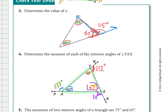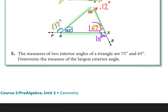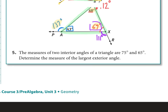The new theorem makes it a little quicker, but it doesn't have to be used all the time. The measures of two angles of a triangle are 75 and 65 — determine the measure of the largest exterior angle. Drawing a picture helps. We can find the third interior angle by subtracting 75 and 65 from 180, so the interior angle is 40 degrees.